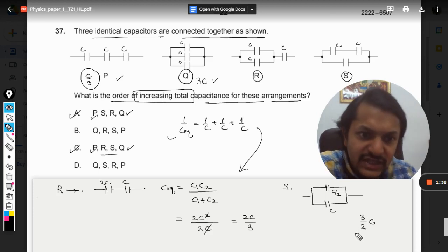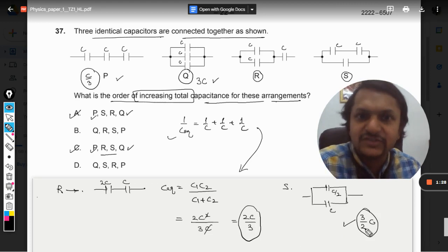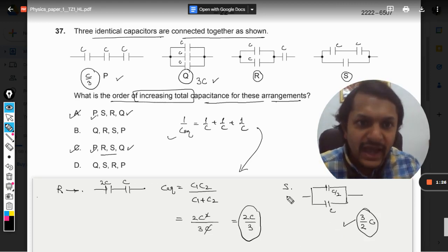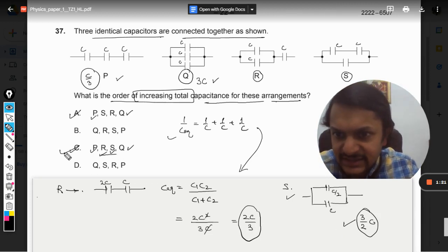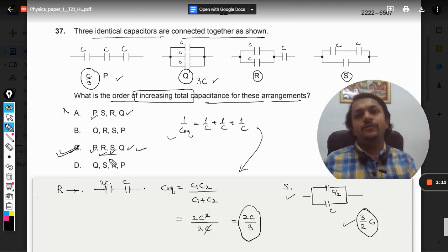So we can see that this is lesser than this. This is having a bigger value, this is having a lesser value. 2C/3 is less than 1, 3C/2 is more than 1. So S is greater than R. Hence C is the correct answer, A is wrong answer. So this is how we solve this question.